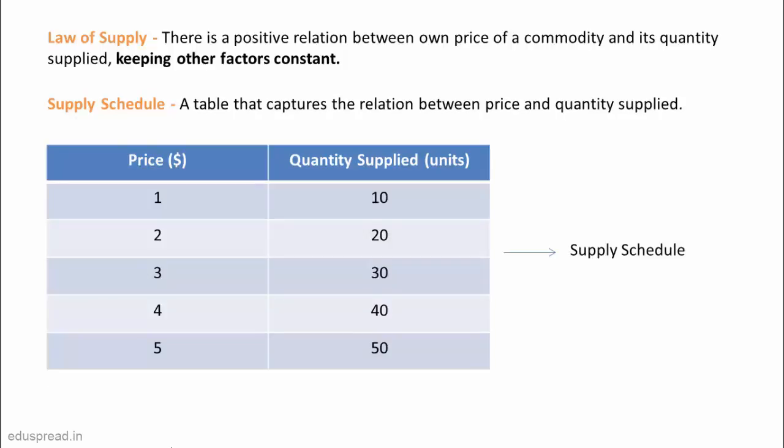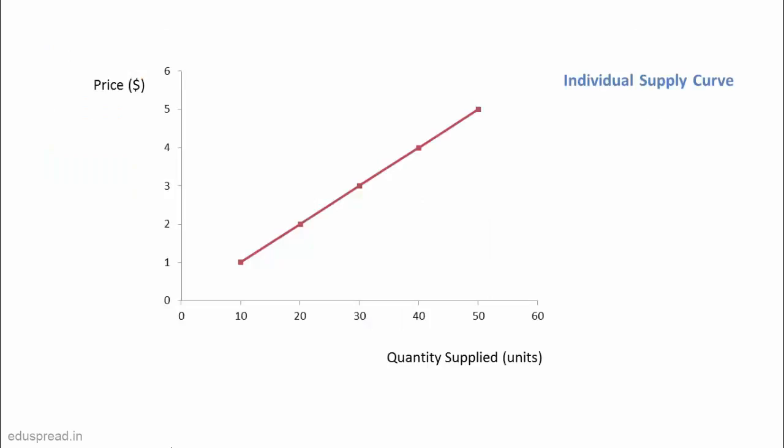Have a look at the following table. It shows that if the price of the good is $1, then the firm will supply 10 units. If the price increases to $2, it will supply 20 units, and so on.